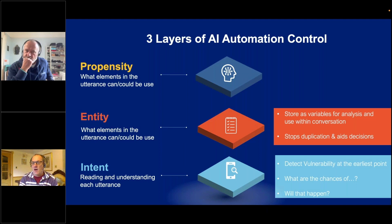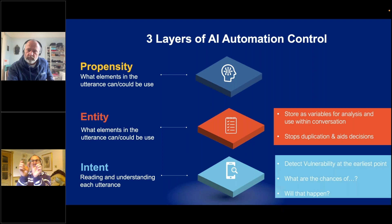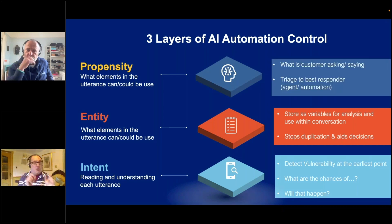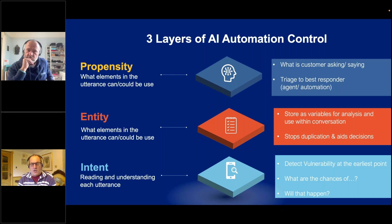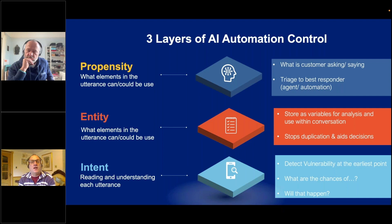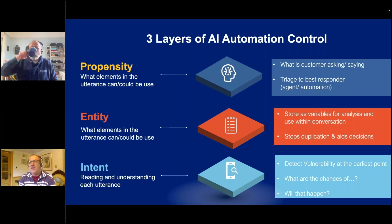Layer three is reading between the lines — what we call the propensity engine. I know the intent, I know the data within the statement, but is there anything else I'm picking up? Have they changed the way they say something? Is it more verbose or shorter? Are they changing the words they're using? Propensity can be trained to do whatever the business wants. We tune it for the collections industry to look at things like: will they pay, and what's the stickiness of that payment promise?